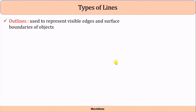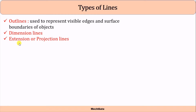The first type is the outline, which is used to represent visible edges and surface boundaries of the object whenever you are preparing the orthographic view. Whatever surface boundaries or edges which are visible should be drawn using a visible line or outline. Next is the dimension line, which is used to represent the dimension between two points or the dimension of a visible edge.